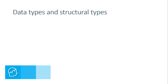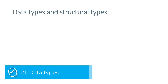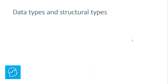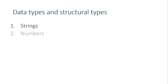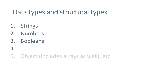The next topic you should learn is data types and structural types. When you start learning about variables and the values you can assign to them, you will have to deal with different types of data. For example, you can add strings (text), numbers, booleans (true/false), and some other types as well. There are also more complex structural types that can contain more data points — and that's where objects and arrays join the game.